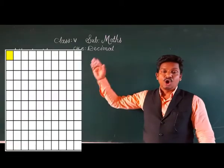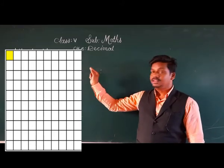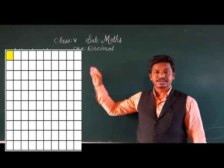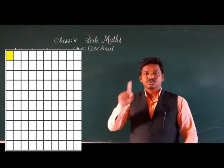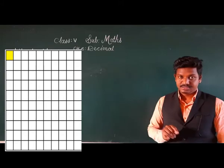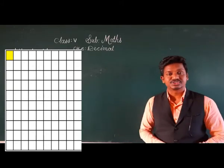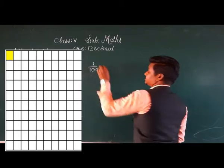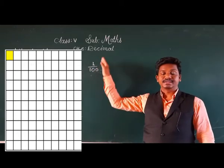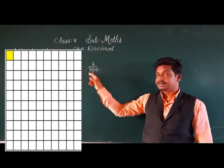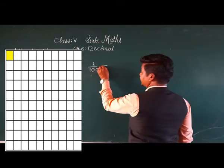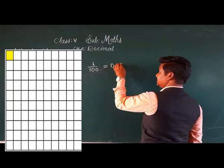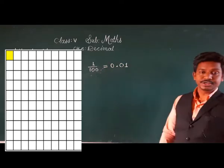Observe this grid. There are a total of 100 small boxes in the grid. Out of 100, one box is shaded. So this is called 1 upon 100, that is the hundredth. This 1 upon 100 can be written as 0.01. When it was 1 upon 10, we wrote 0.1. Now with denominator 100, we write 0.01 — after the decimal point there must be 2 digits, so we place a 0 before the 1.